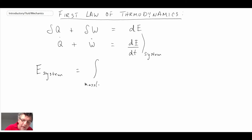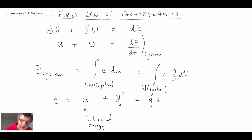Energy can be a mass integral, where little e is energy per unit mass, or a volume integral. Little e is defined as u plus v squared over 2 plus gz: internal energy, kinetic energy, and potential energy respectively. That's the first law.